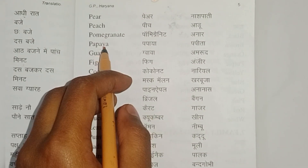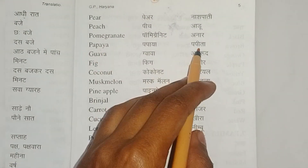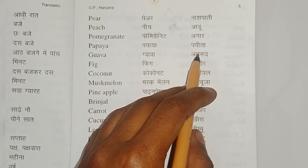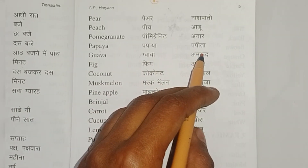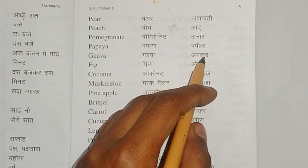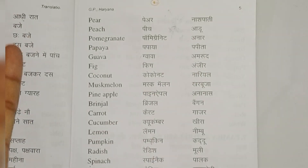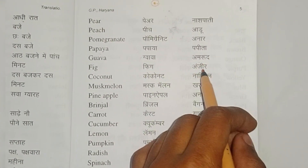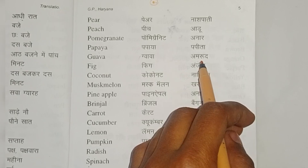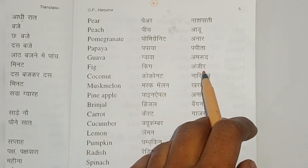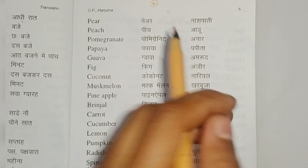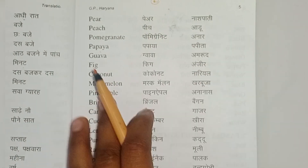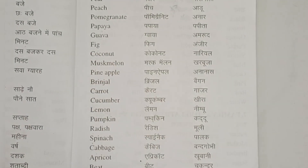Papaya — Papita. Guava — not Guava, it's Guava — in Hindi that is Amrood. Fig — Anjeer. Coconut — Nariyal. Musk melon — Kharbuja. Pineapple — Ananas. Brinjal — here are the vegetable names — Brinjal — Baingan. Carrot — Gajar. Cucumber — not Cucumber, it's Cucumber — Kheera.